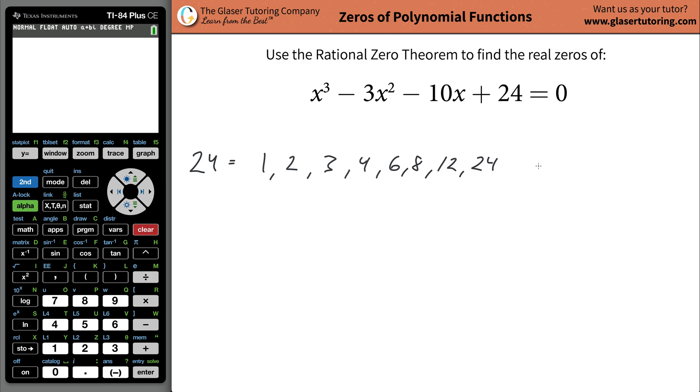Now these factors are known as the p value. If you're like what the heck is p, don't worry about it. You really don't even need to know it. They just call it p. Then what you're going to do is you're going to take the coefficient of the leading x term, which is a 1, and you're going to list out the factors of 1. It's just 1 and 1, right? 1 times 1.